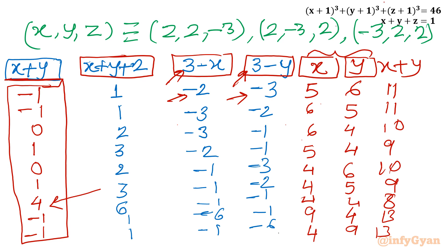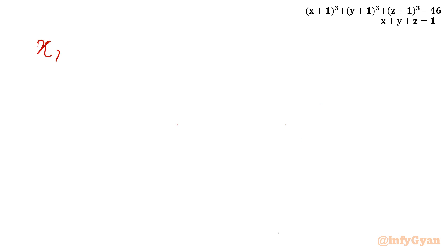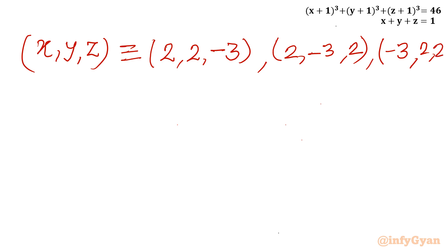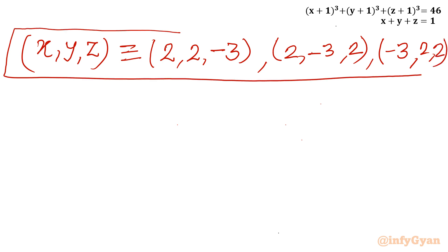So our final integer solutions are: x, y, z equals 2, 2, minus 3; then 2, minus 3, 2; and minus 3, 2, 2. This brings the end of this video. I hope this video will be somewhere meaningful. Do not forget to like, share, and subscribe, friends. Bye, till next video. Good luck and take care of yourself.